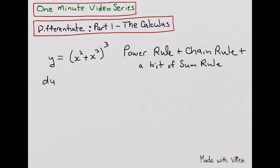So first we say dy dx, and we're going to use the power rule first. We take the 3 and multiply it by whatever is outside the brackets here, and that would be 3 times x squared plus x cubed.